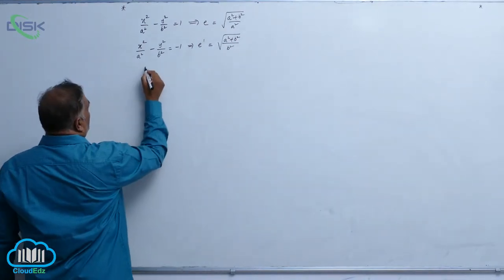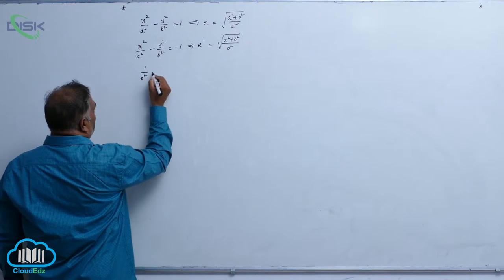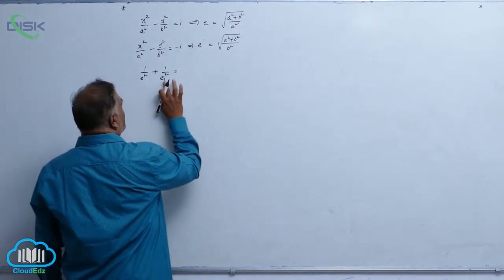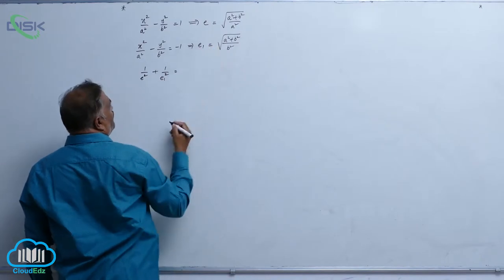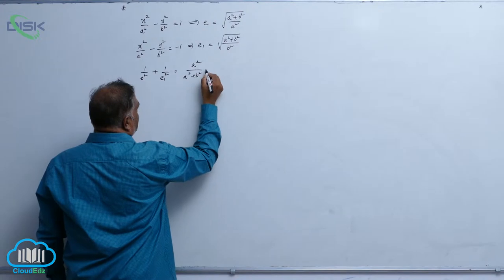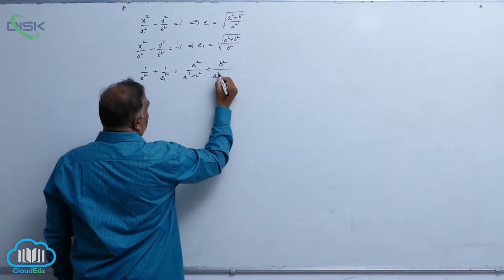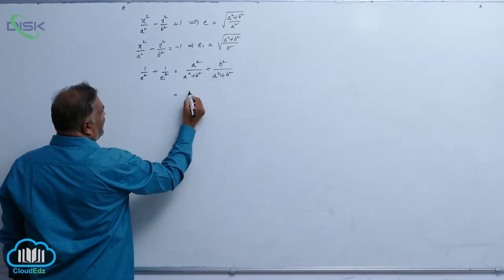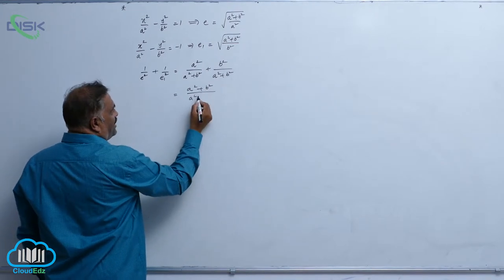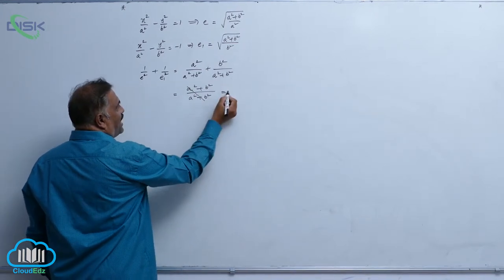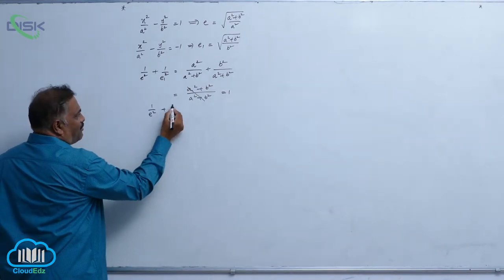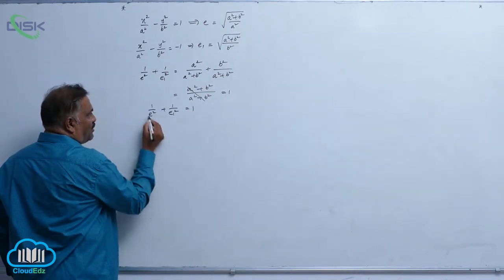Now let us consider 1/e² + 1/e₁². This equals a²/(a² + b²) + b²/(a² + b²), which leaves (a² + b²)/(a² + b²) = 1. So 1/e² + 1/e₁² = 1.